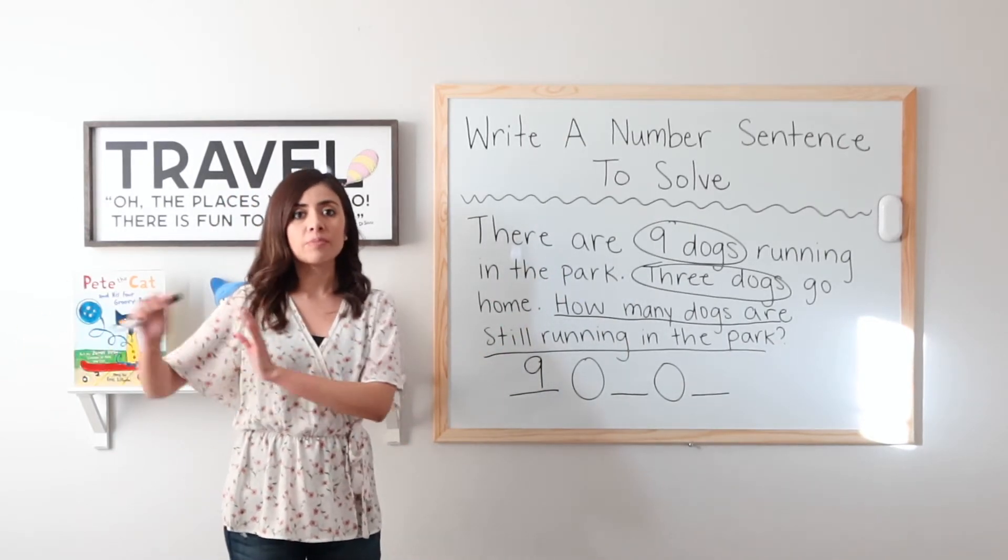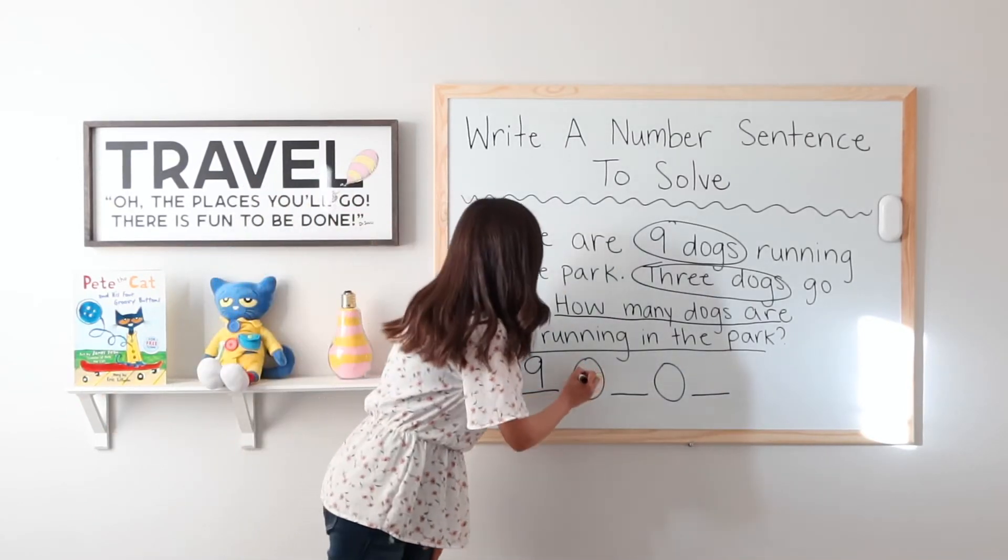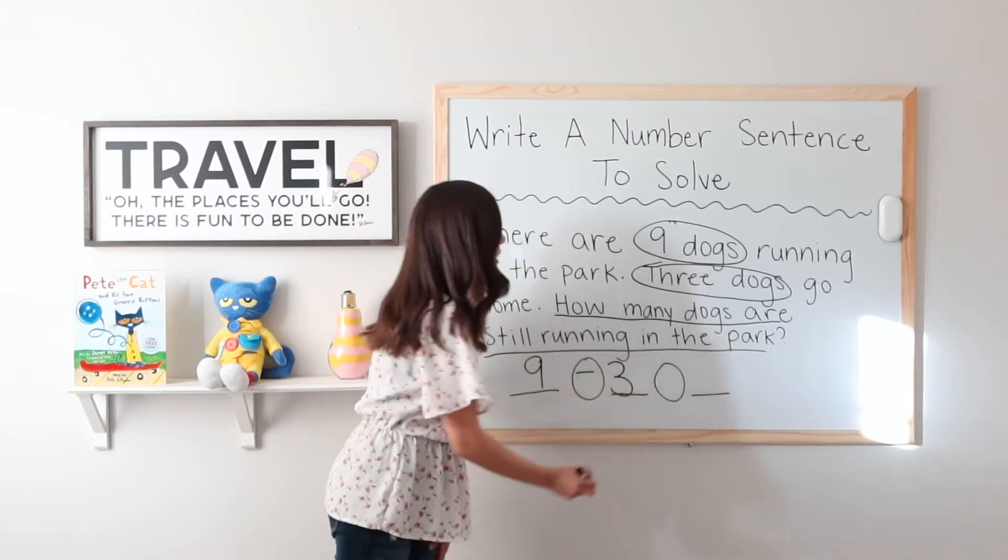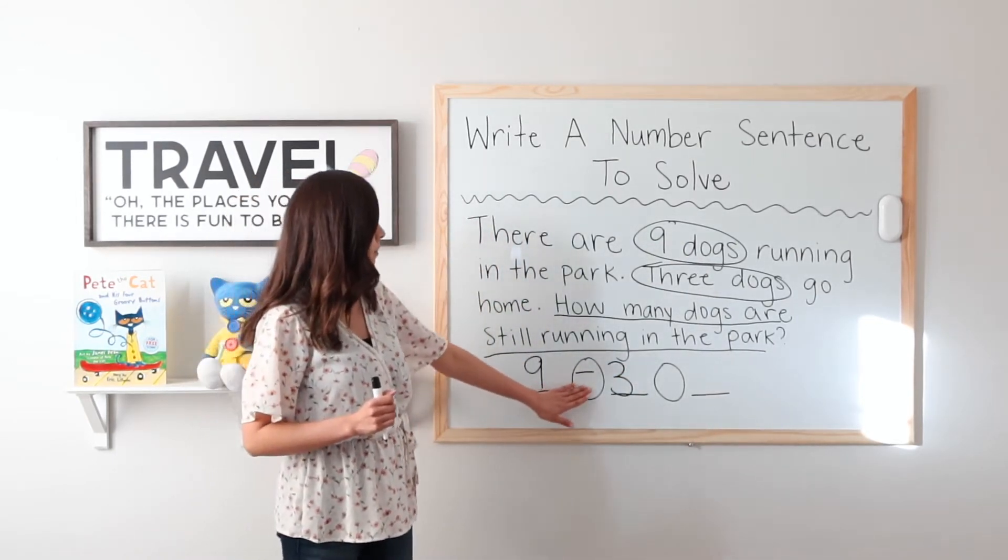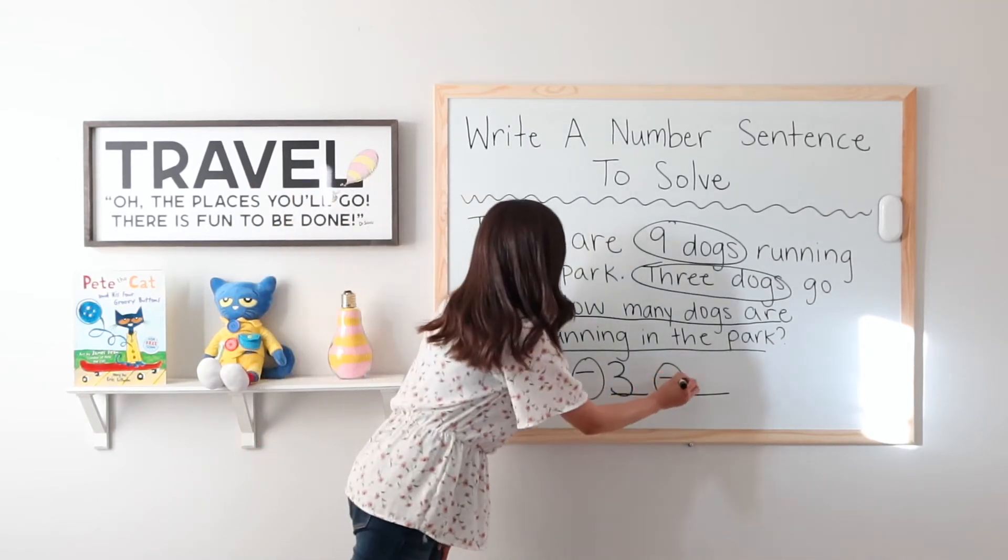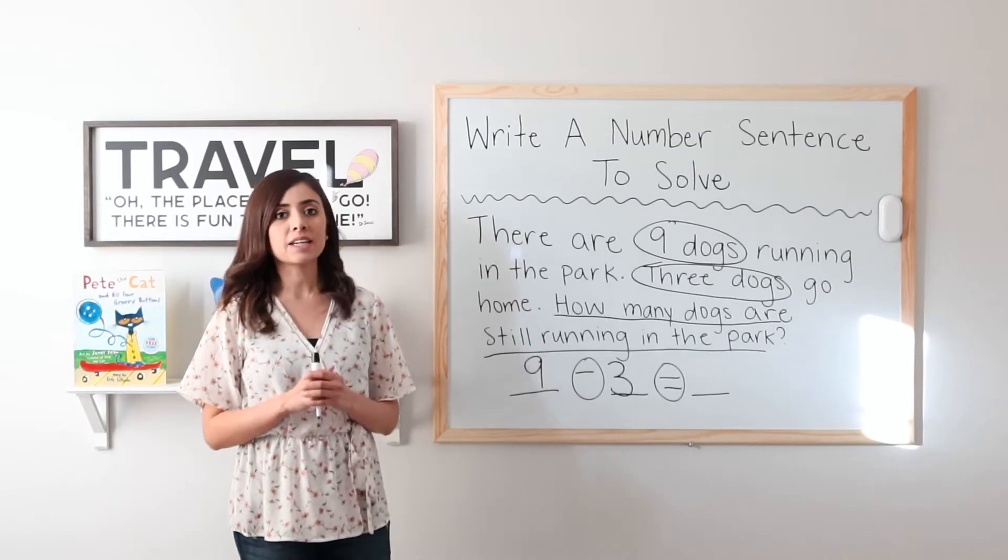We know that three went home, so they went away. Remember, when something goes away, we are subtracting, so let's subtract the three dogs that went home. So now I have nine minus three equals what?